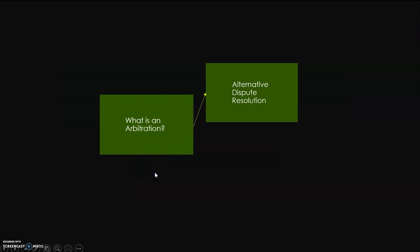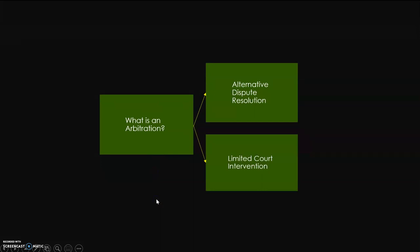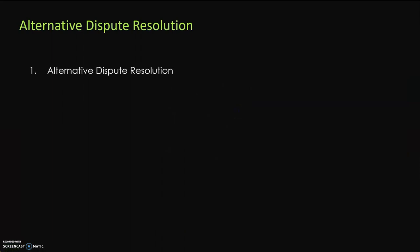Arbitration is essentially an alternative dispute resolution process and the courts have a very minimal role in arbitration. Alternative dispute resolution, as the name implies, is a process which is alternative to our regular judicial system. Legal disputes in our country are usually resolved by courts and tribunals — that is our judicial system. But then there are processes alternative to that traditional approach, which is called alternative dispute resolution. Arbitration is one of those processes.